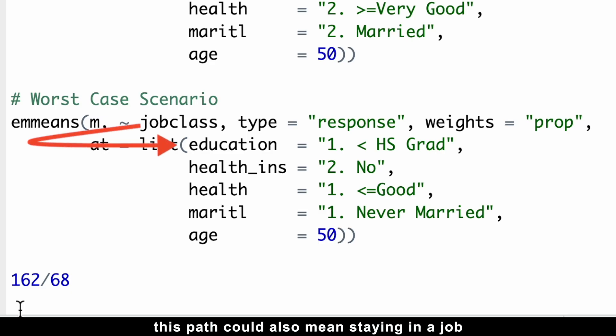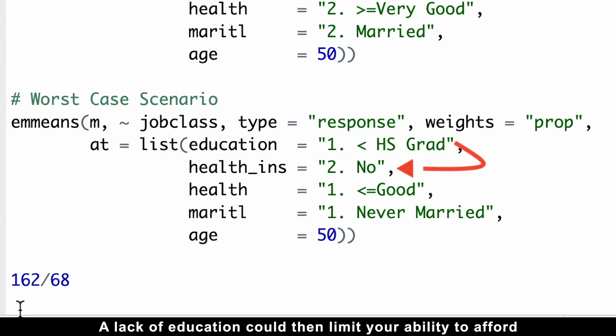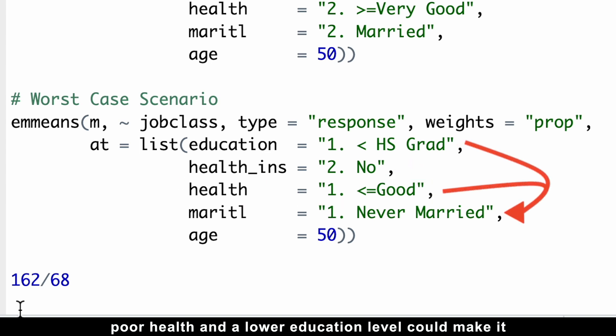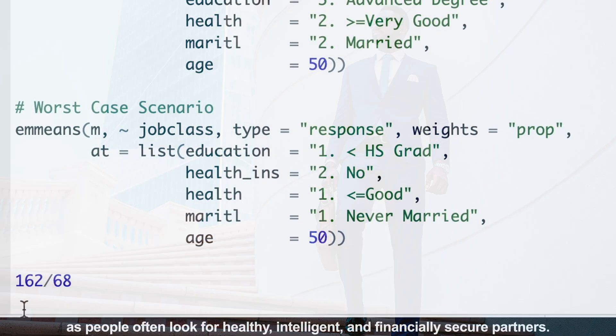A lack of education could then limit your ability to afford health insurance, potentially impacting your health. Moreover, poor health and a low education level could make it more challenging to find a partner, as people often look for healthy, intelligent, and financially secure partners. What's the result?